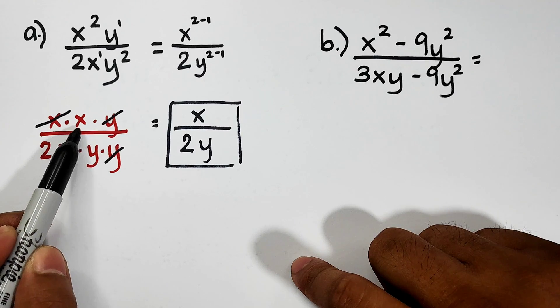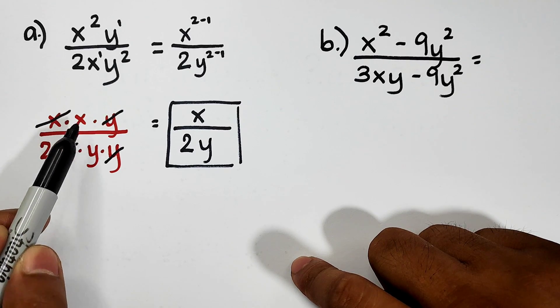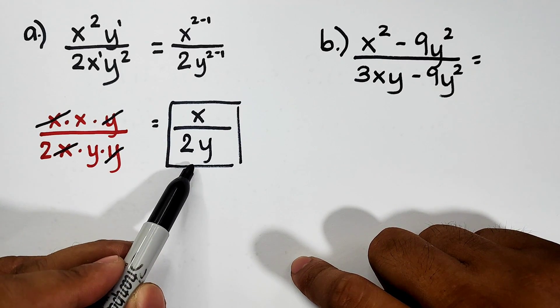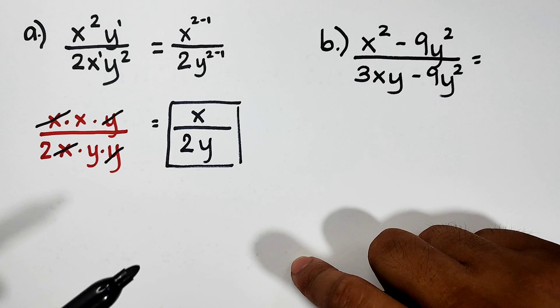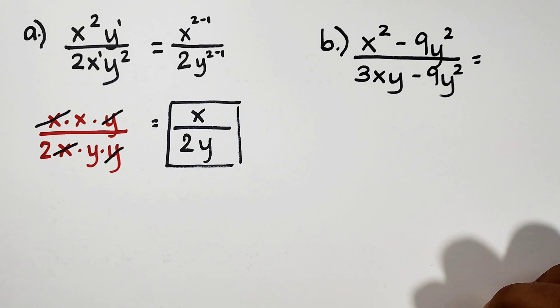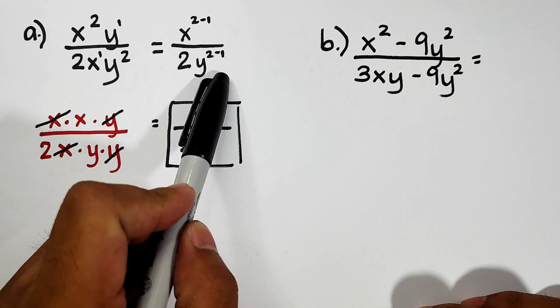As you can see, what will remain here is x, and for denominator, it's 2y. That's it, guys. Now you know how to simplify letter A. You have two different ways, so it's up to you if you will adopt the first one or the second one.